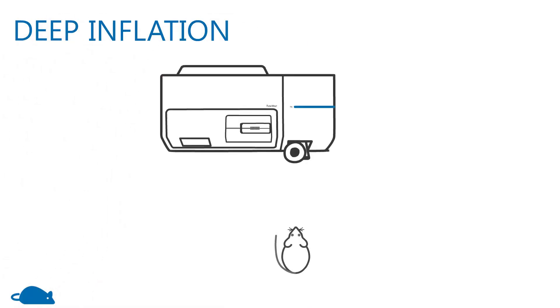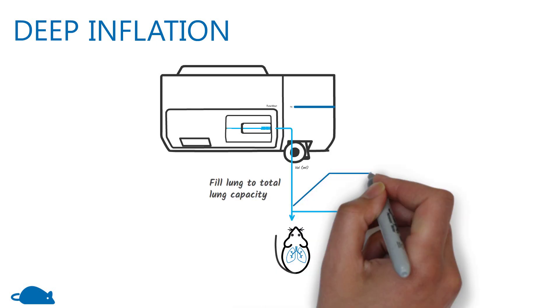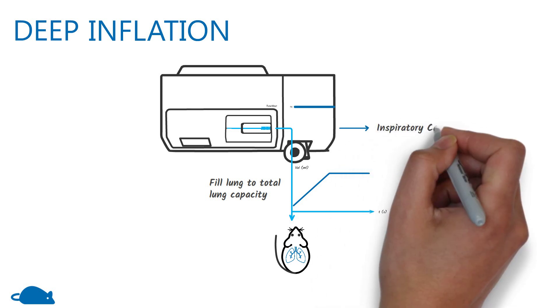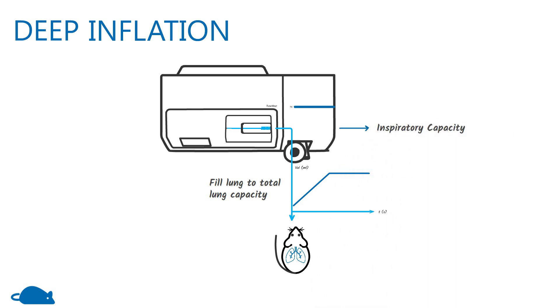In the deep inflation measurement, the lungs are recruited to total lung capacity, followed by a brief hold for lung pressure equilibration. The inspiratory capacity is calculated as the total volume change due to the measurement.